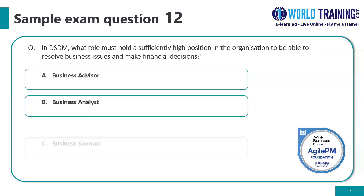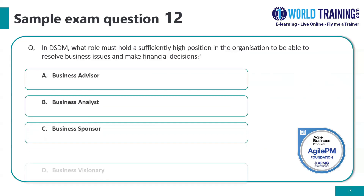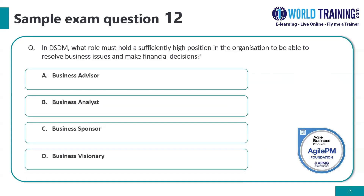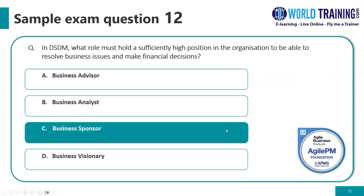Question number twelve: in DSDM, what role must hold a sufficiently high position in the organization to be able to resolve business issues and make financial decisions? The key word being financial decisions. The answer is C: a business sponsor.